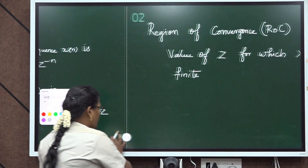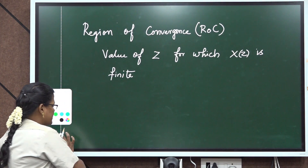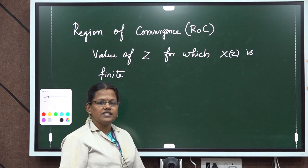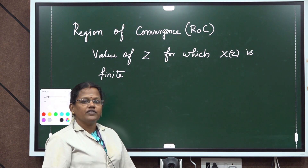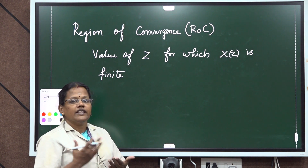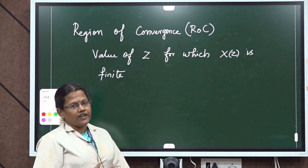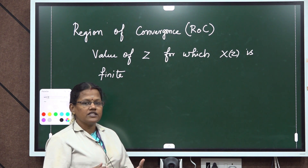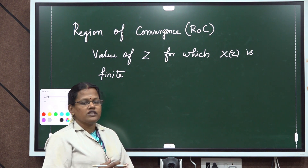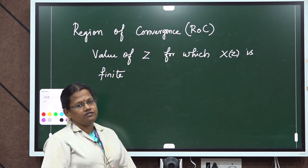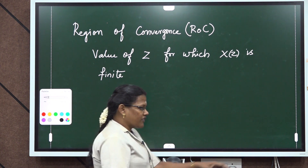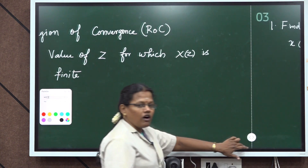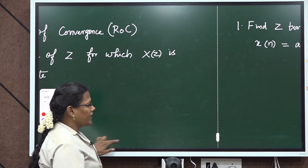Now we see the definition of the ROC, that means Region of Convergence. Region of Convergence means the values of z for which X(z) is finite — that is called the Region of Convergence. The value of z for which the X(z) value is finite is called the Region of Convergence.